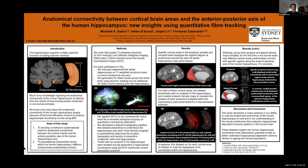We aimed to assess where within the human hippocampus different cortical brain areas preferentially connect. To do this we used high quality data from the Human Connectome Project, and for each participant we manually segmented the whole hippocampus to ensure anatomical accuracy. We used anatomically constrained tractography to generate 70 million tracks across the whole brain.